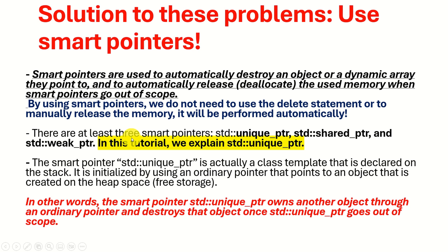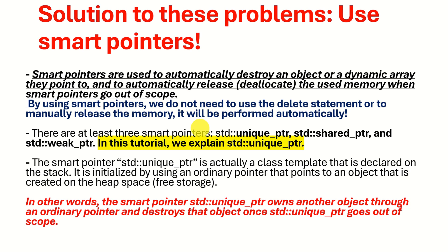So how do we solve these problems? The solution is to use smart pointers. Smart pointers automatically destroy the object or dynamic array they point to and automatically release the memory when they go out of scope. We do not need to use the delete statement — memory management is performed automatically. There are at least three smart pointers: unique_ptr, shared_ptr, and weak_ptr. In this tutorial we explain unique_ptr.